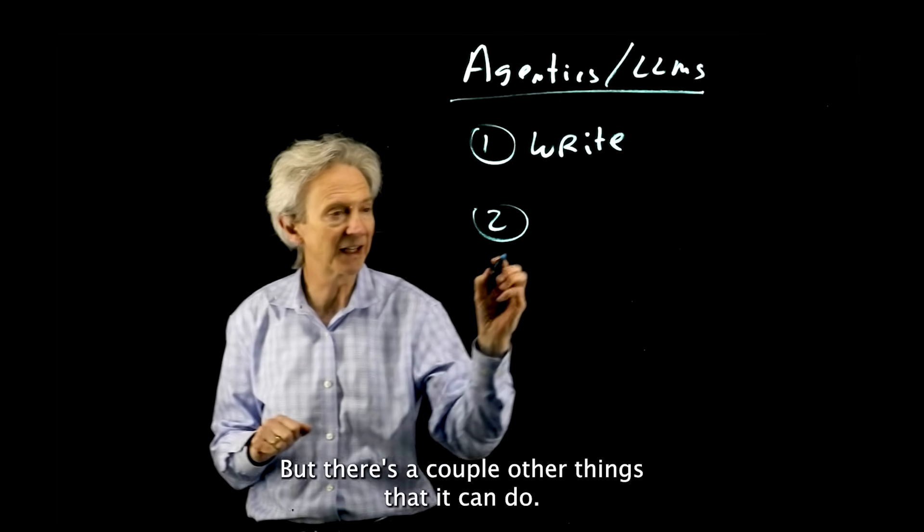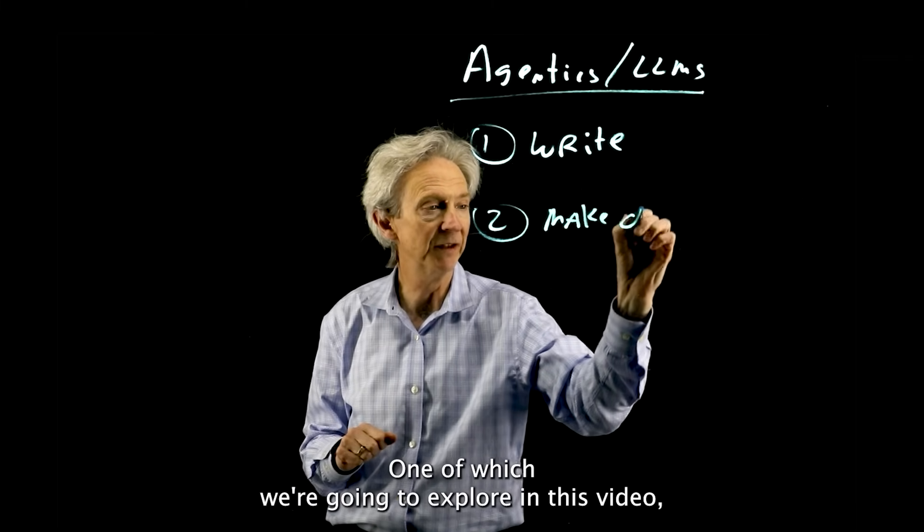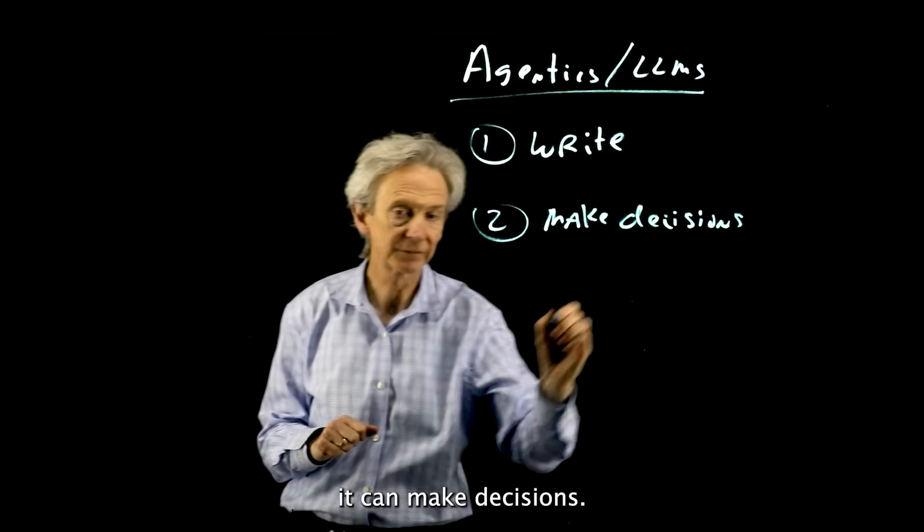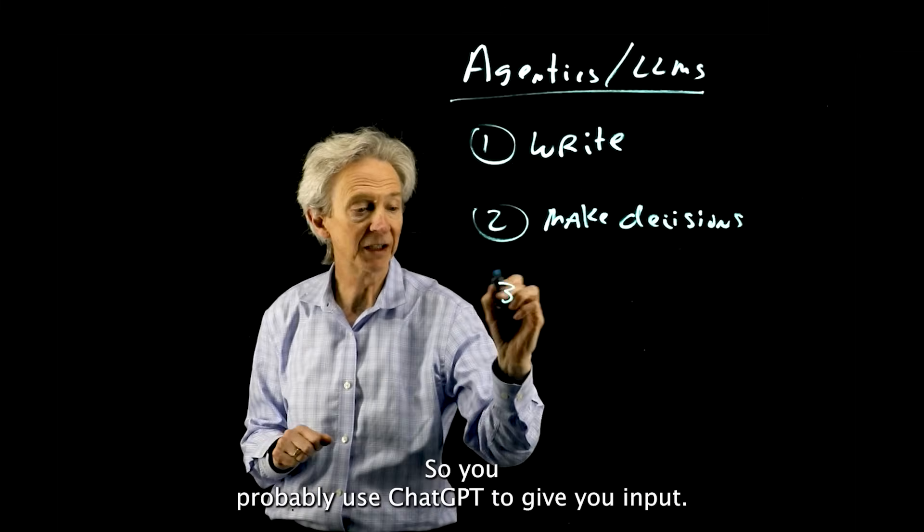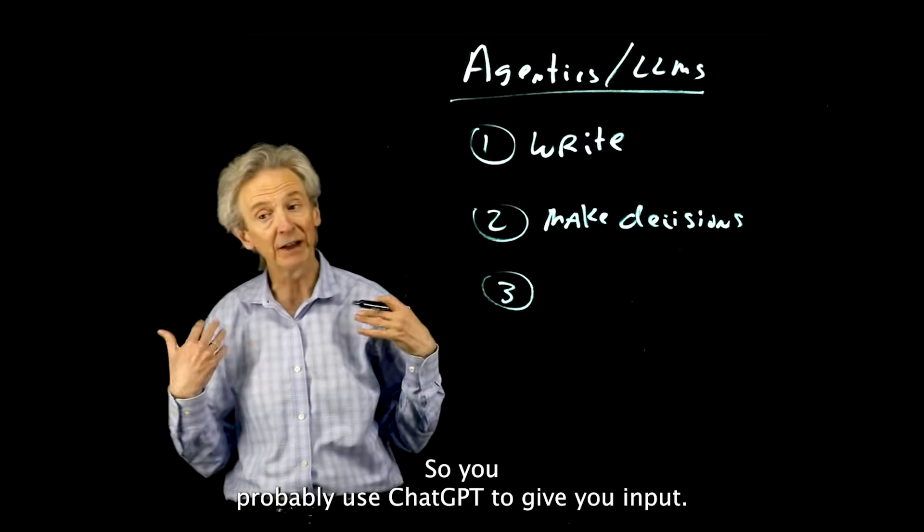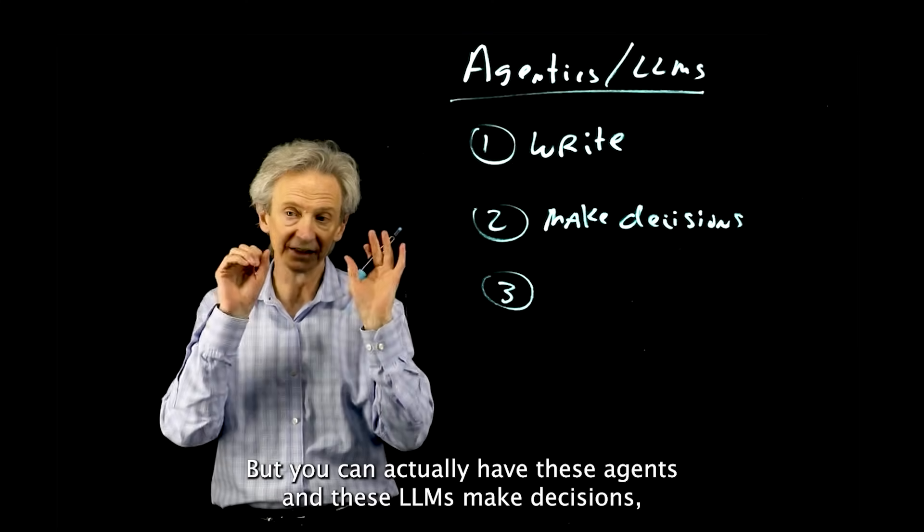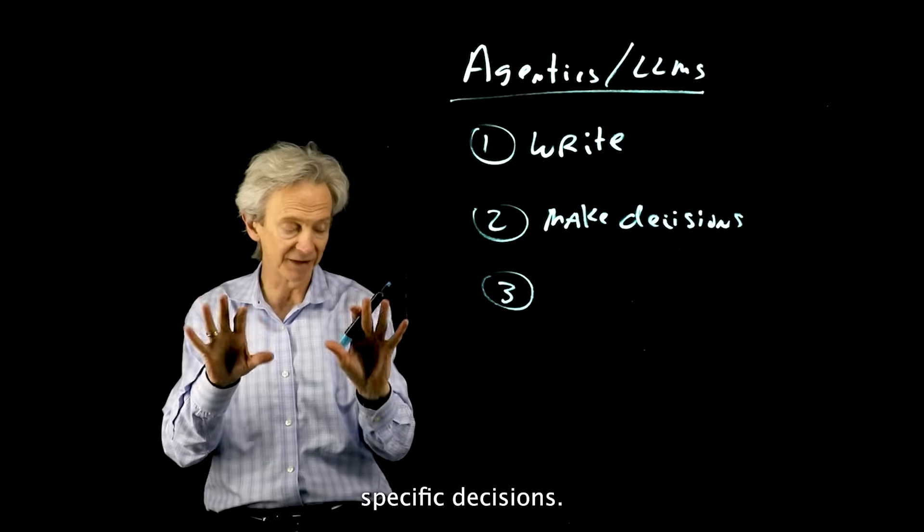But there's a couple of things that it can do, one of which we're going to explore in this video. It can make decisions. You've probably used ChatGPT to give you input and you made the decision, but you can actually have these agents and these LLMs make decisions, specific decisions.